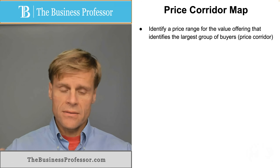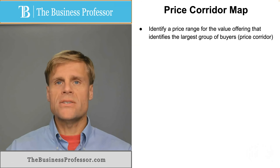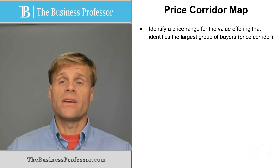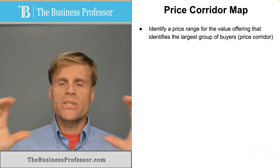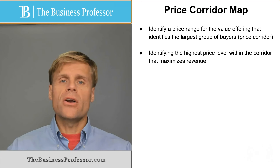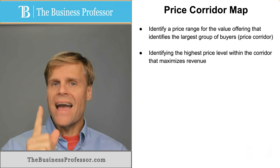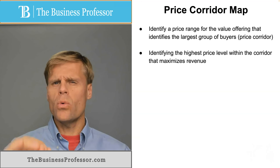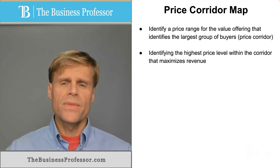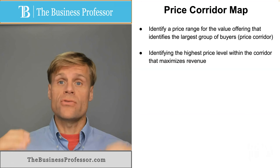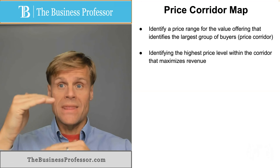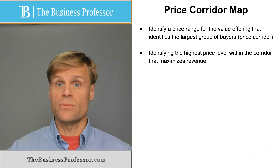The way you use the price corridor map is: one, to identify a price range to start with for whatever value offering you have that identifies the largest group of buyers — this is your price corridor. From there you can pinpoint the highest price point in that corridor that maximizes your revenue within that corridor, identifying the specific price point that is going to grab the most customers within the range that has the most potential customers in it.